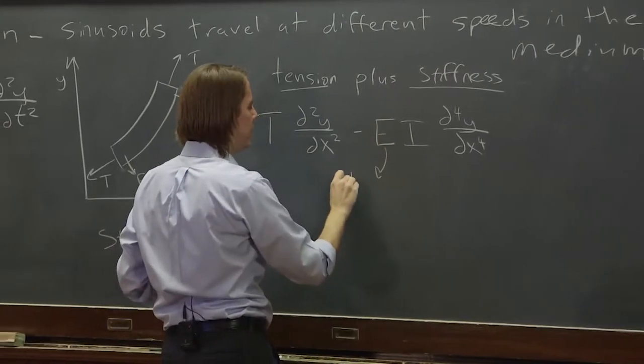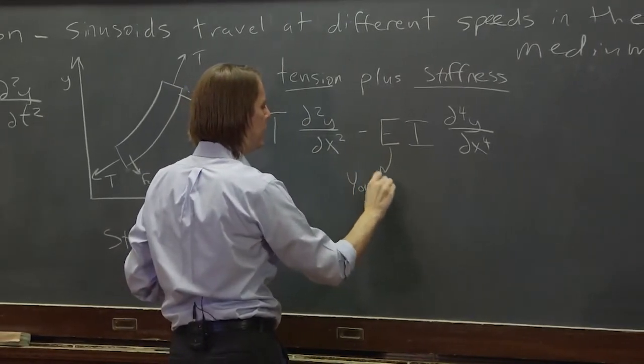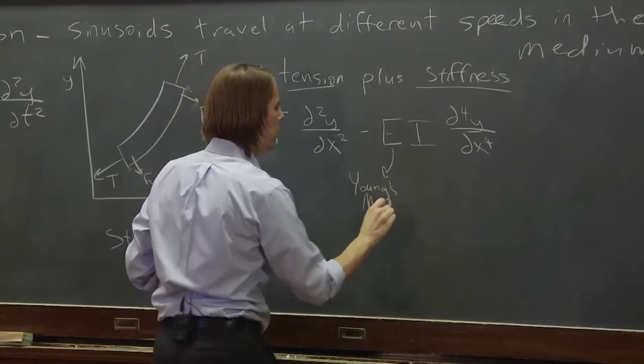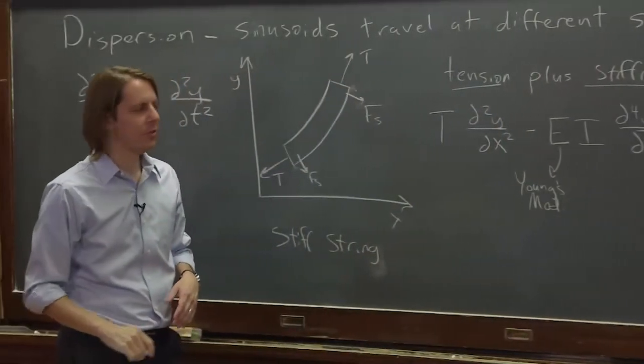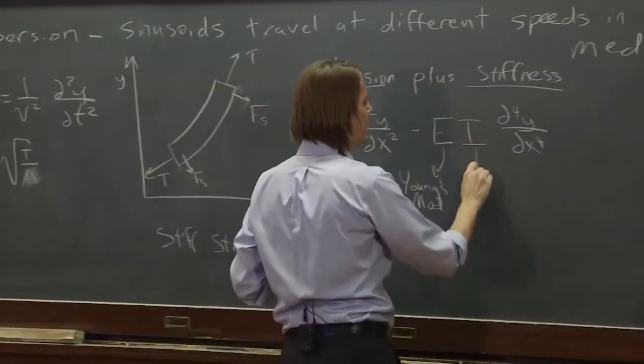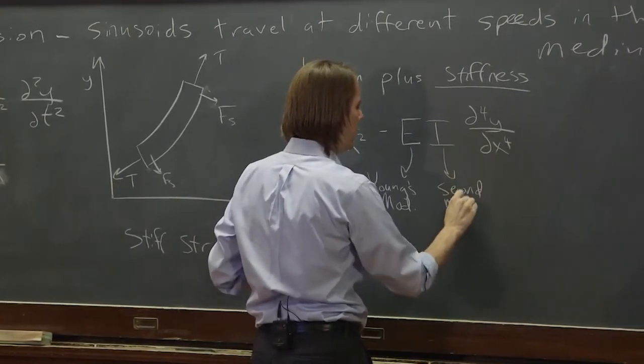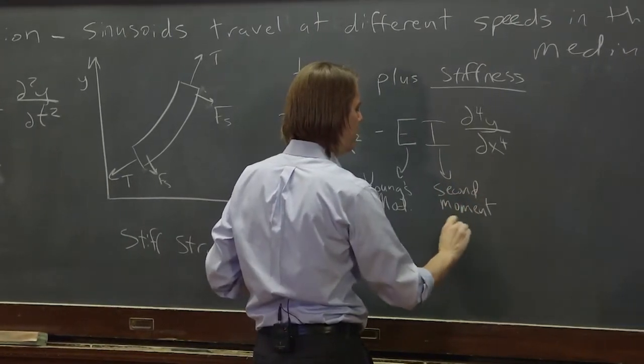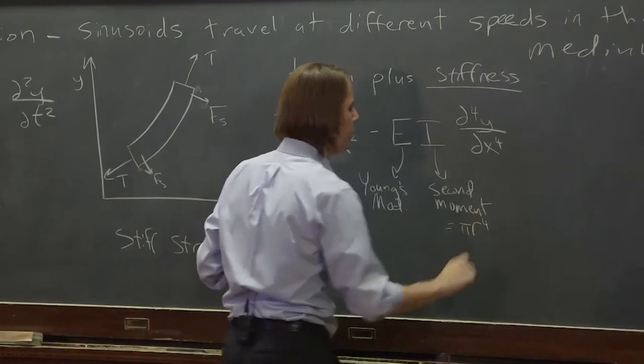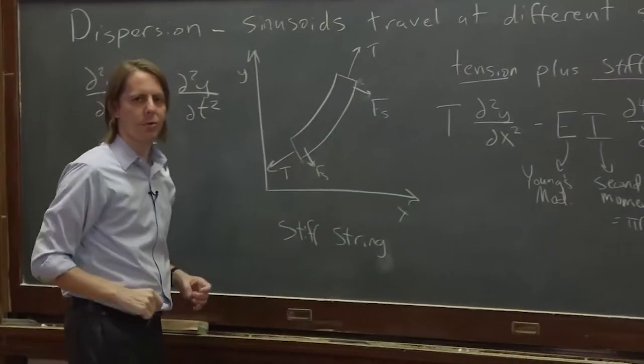Okay, so this is Young's modulus. This is the inherent stiffness of the material. This is the second moment of inertia and it's equal to πr⁴ if you have a circular cross-section.